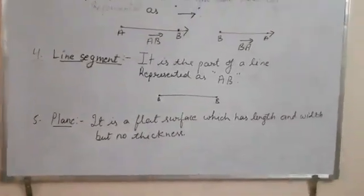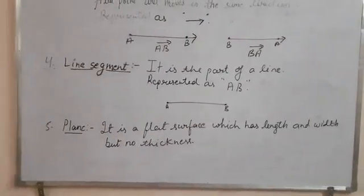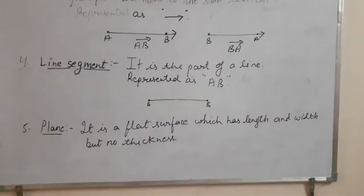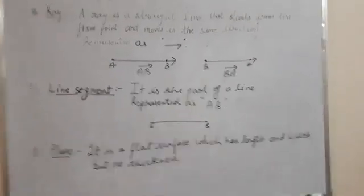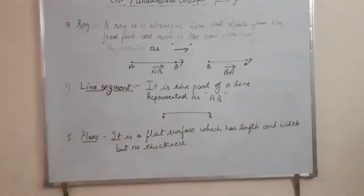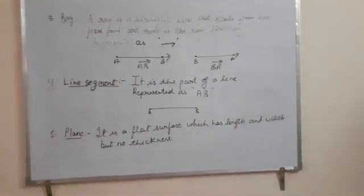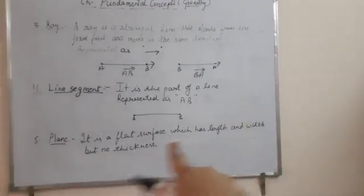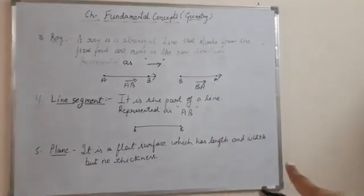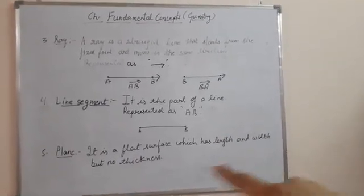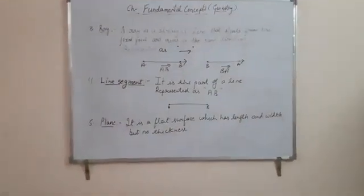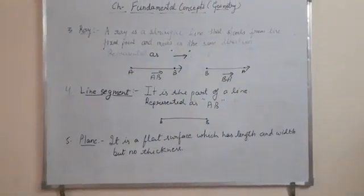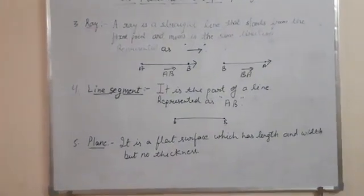Next comes plane. A plane is a flat surface which has length and width but no thickness. For example, this whiteboard is a flat surface — it has length and breadth but no thickness. Like this wall and the table top, those are also flat surfaces.